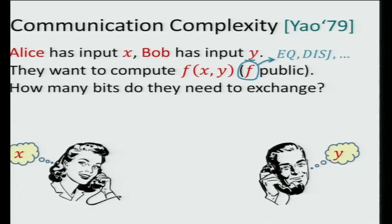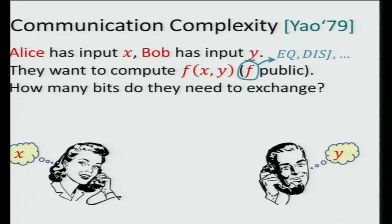In communication complexity the setting is as follows. We have Alice and Bob. Alice gets some input x, but now we give Bob a possibly different input y. Alice knows x but nobody else knows x, and Bob knows y but nobody else knows y. They want to compute a function of both inputs — for example, the equality function, to determine whether x equals y, or any other function. The question is how many bits do they need to exchange in order to compute f?